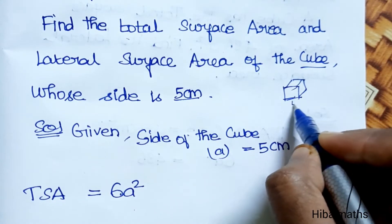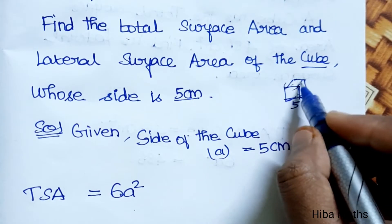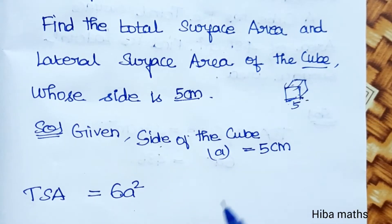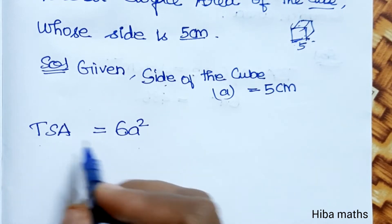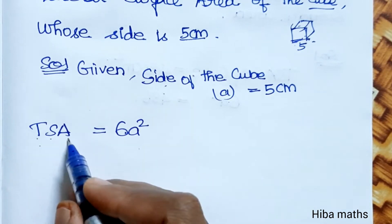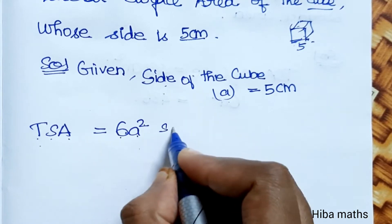Given: Side of the cube (a) = 5cm. The total surface area of a cube is TSA = 6a² square units.